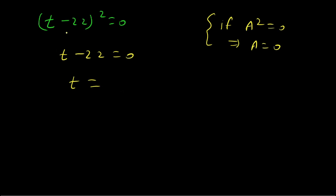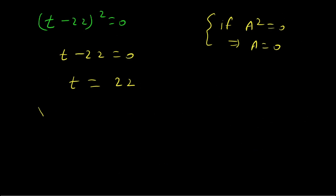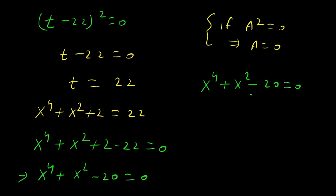Since t = 22 and t = x⁴ + x² + 2, we substitute back: x⁴ + x² + 2 = 22. Taking all terms to one side: x⁴ + x² + 2 − 22 = 0, which simplifies to x⁴ + x² − 20 = 0. We can rewrite this as (x²)² + x² − 20 = 0.